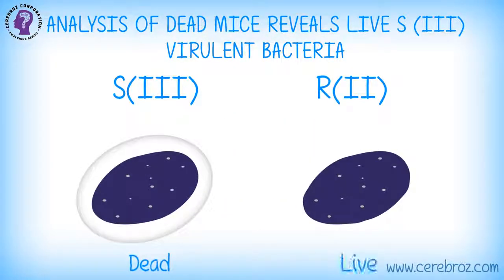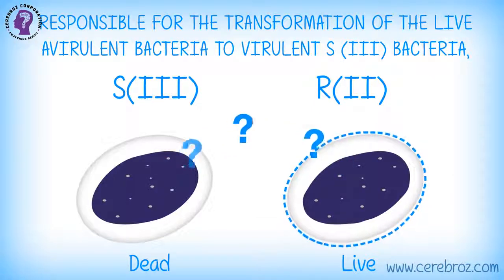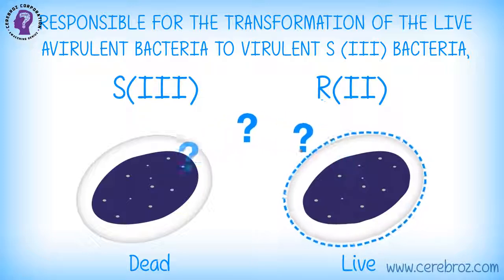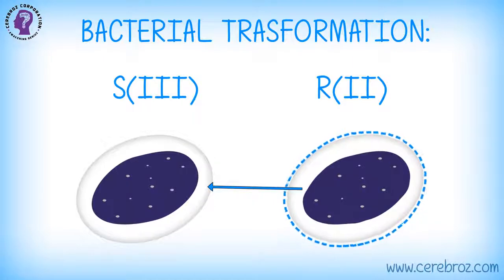Analysis of dead mice reveals live S3 virulent bacteria, suggesting something from the heat-killed S3 had transformed the live avirulent R2 bacteria, responsible for the transformation of the live avirulent bacteria to virulent S3 bacteria, causing death of mice. This is called bacterial transformation.